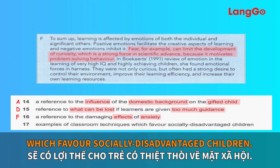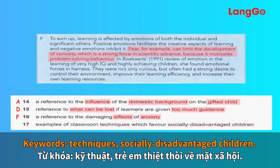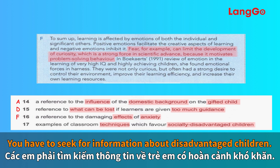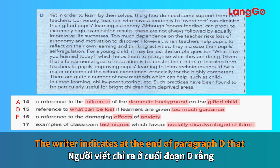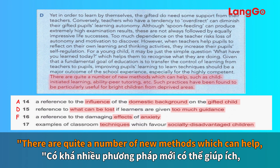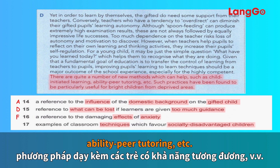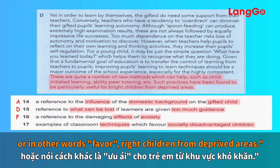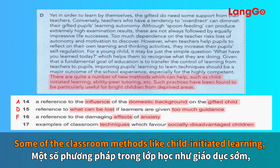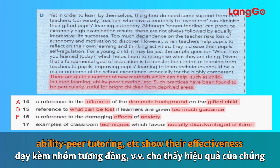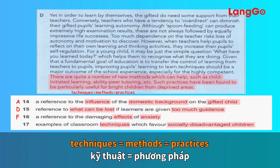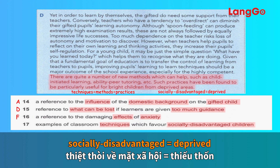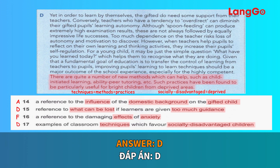Question 17: examples of classroom techniques which favour socially disadvantaged children. Our keywords are techniques and socially disadvantaged children. You have to seek out information about disadvantaged children. The writer indicates at the end of paragraph D that there are quite a number of new methods which can help, such as child-initiated learning, ability peer tutoring, etc. Such practices have been found to be particularly useful for — in other words, favour — children from deprived areas. Techniques, methods, and practices are synonymous, as are socially disadvantaged and deprived. Our answer is D.